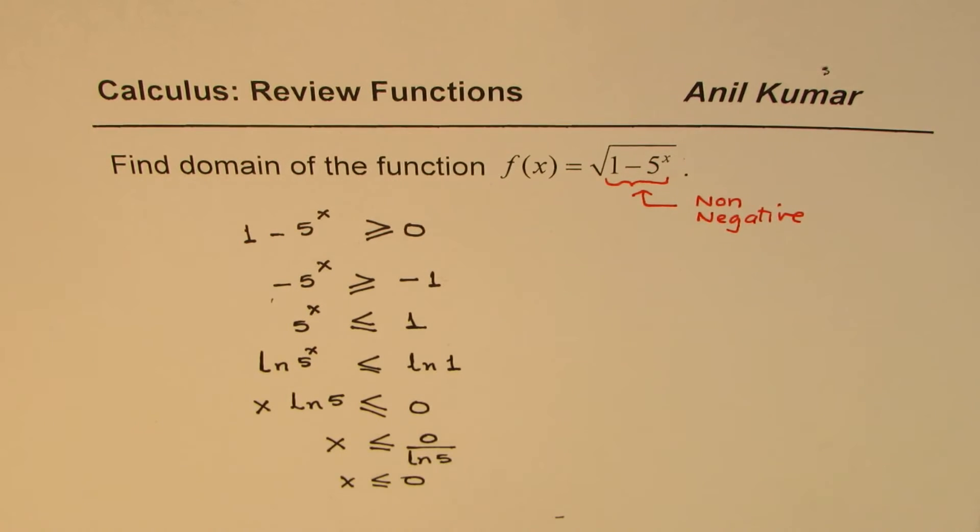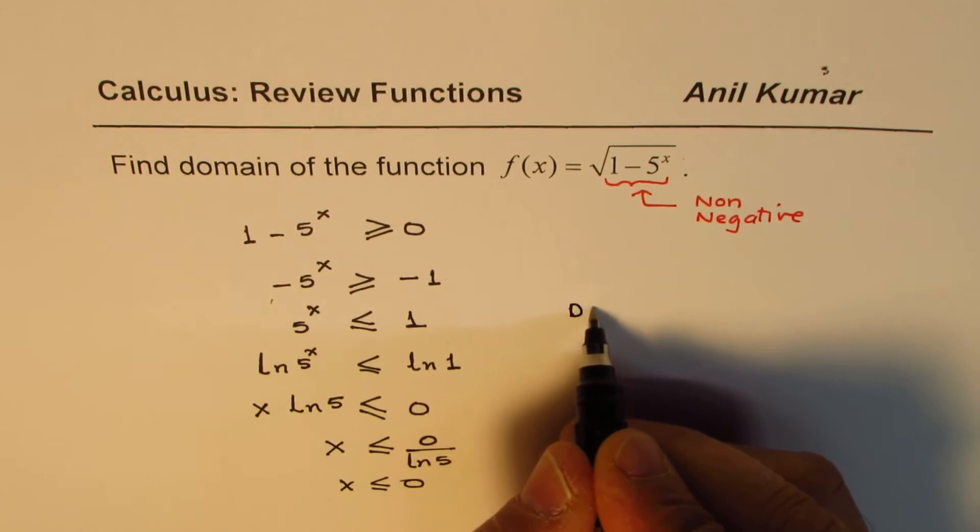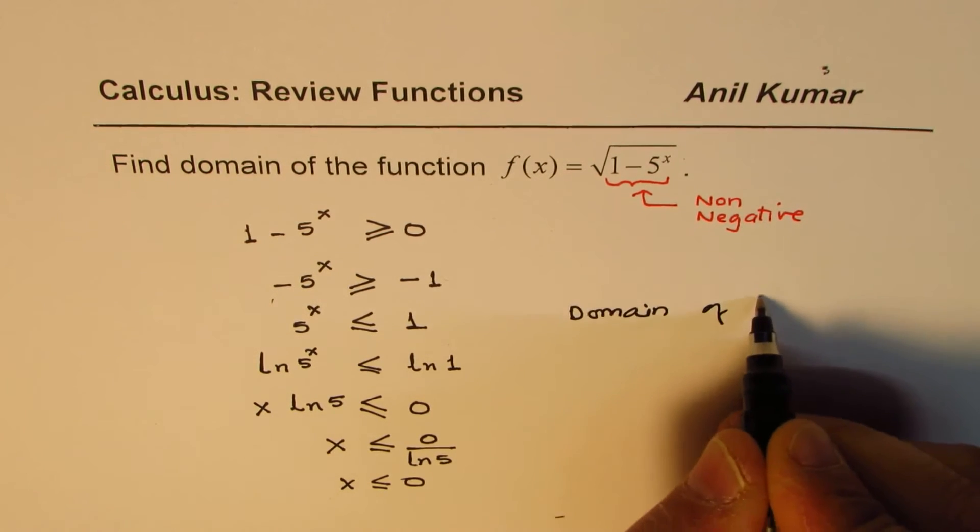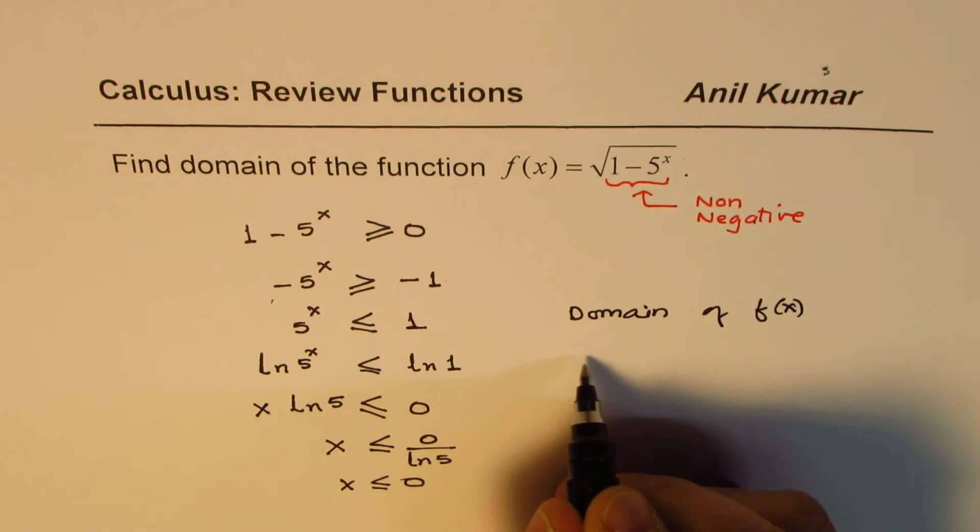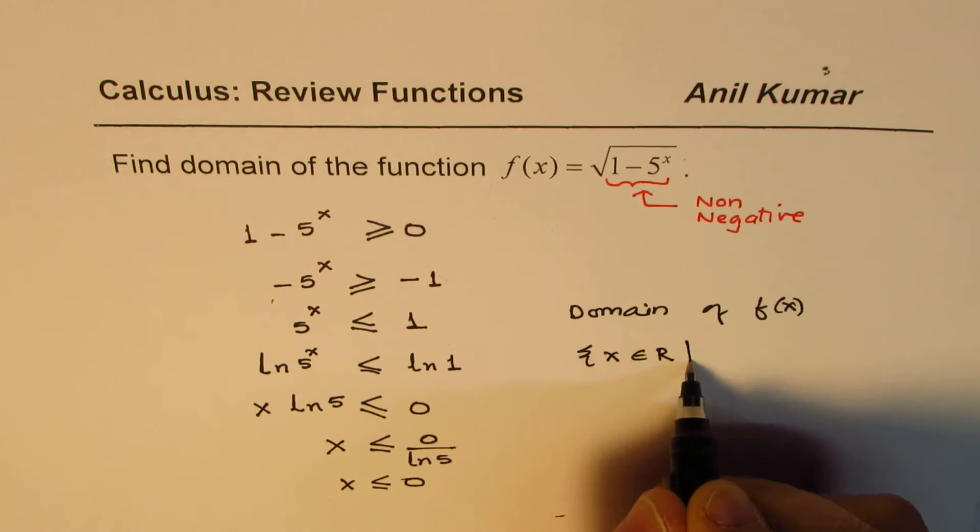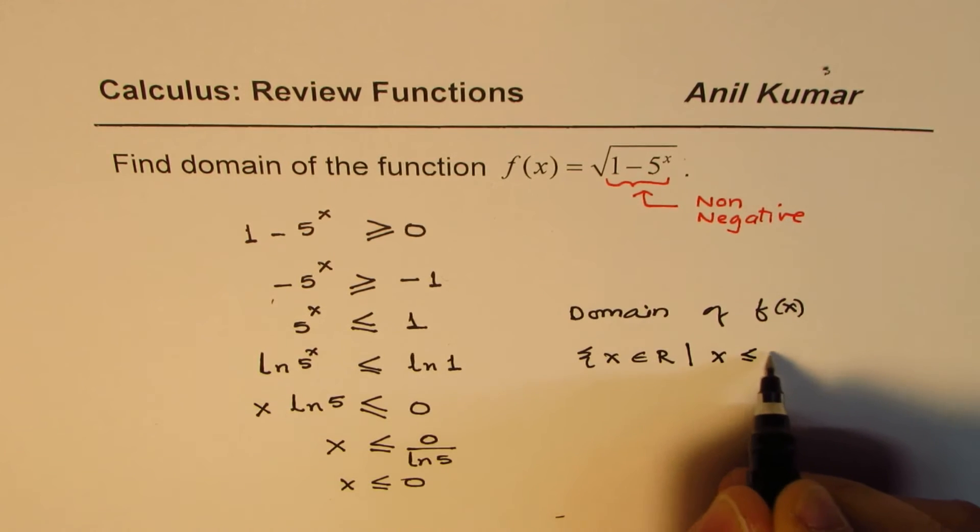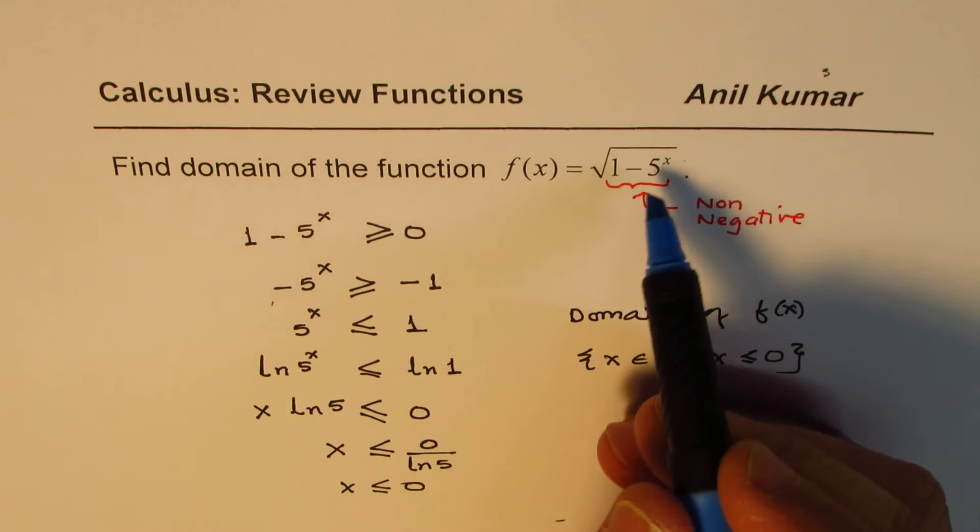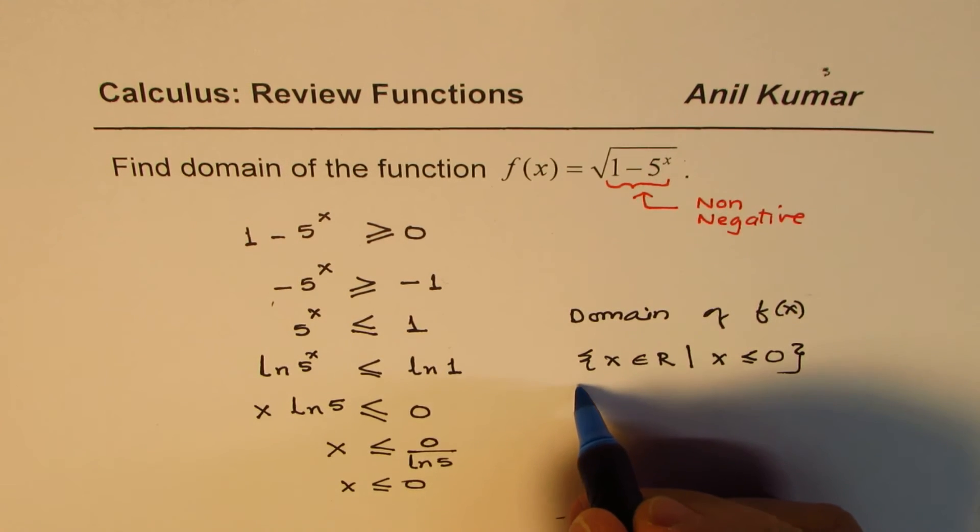So in this case, x should be less than 0, and therefore we can write that the domain of f(x) is x belongs to real numbers where x is less than or equal to 0. You can also get to this result if you look into the graph of 5^x.